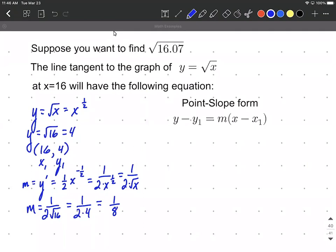All right, so now with our point, our x₁, y₁ values, and our slope of one-eighth, let's go over to our formula, the point-slope form of a line. We can go y minus our y value is 4 equals one-eighth, and then x minus our x value is 16.